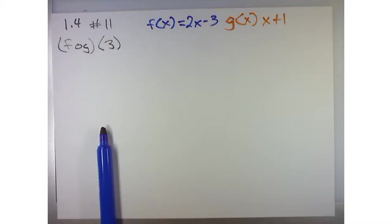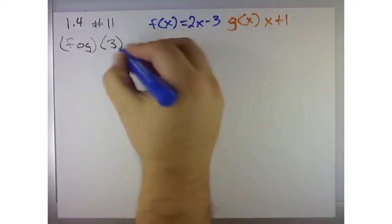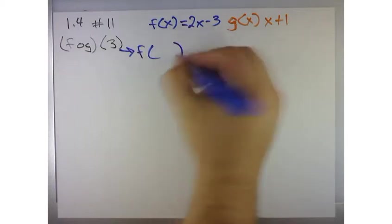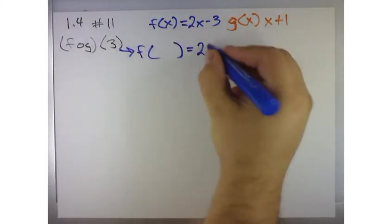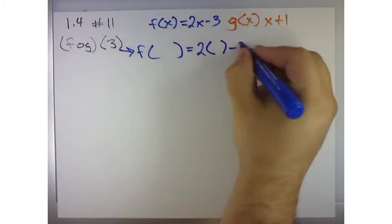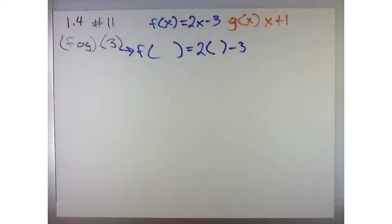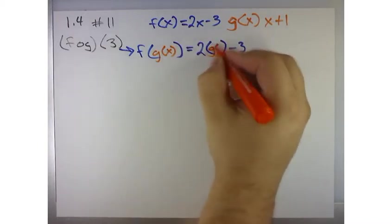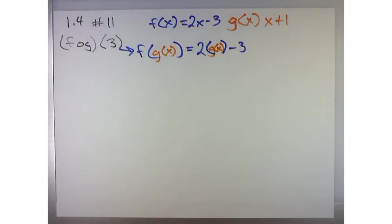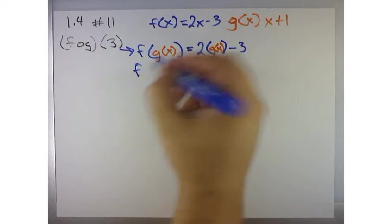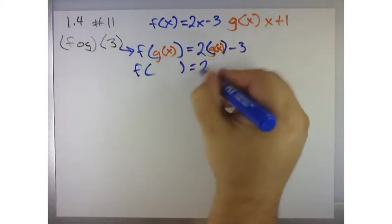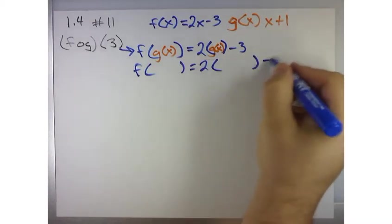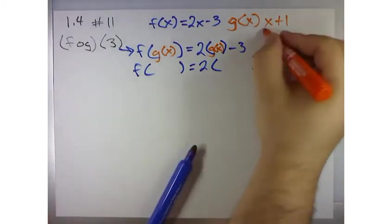The first thing I need to do is compose f of g. This becomes f of some stuff, which is 2 times the stuff minus 3. When I say f of g, I mean f of g of x. So wherever there's an x, I'm replacing it with g of x. What is g of x?